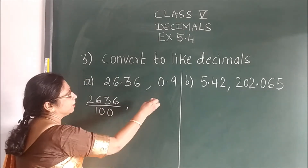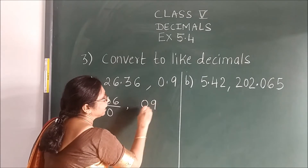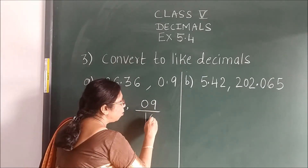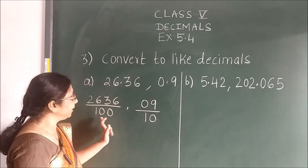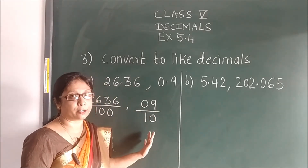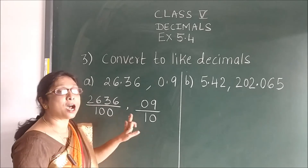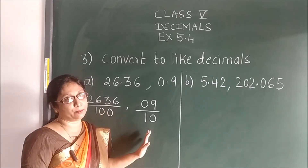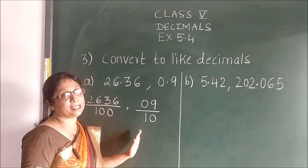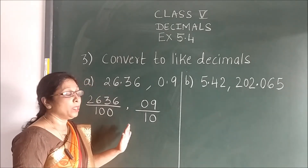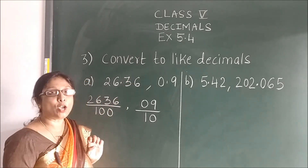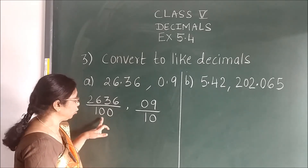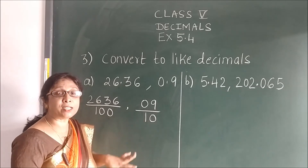So you will put here 2 zeros. Now here, you will write the up number as it is, and see after point how many numbers are there? 1. So you will write here 1, 0. Now you see the denominators are different. When denominators are different, it means it is unlike decimal. It is not same. So to make it like, what you have to do? You see the denominator. Here 2 zeros are there, but here only 1 zero is there.